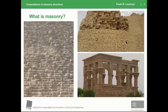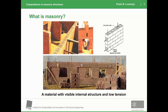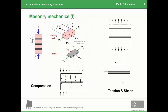Masonry is not a very simple definition because it basically consists of adding masonry units — some pieces of stone or brick — on top of each other, with or without some mortar to bind them together. In a simplified way, this is typically a material with a visible internal structure, where the masonry units are normally quite large. It has very low tensile strength, though modern applications add reinforcement to overcome this deficiency.